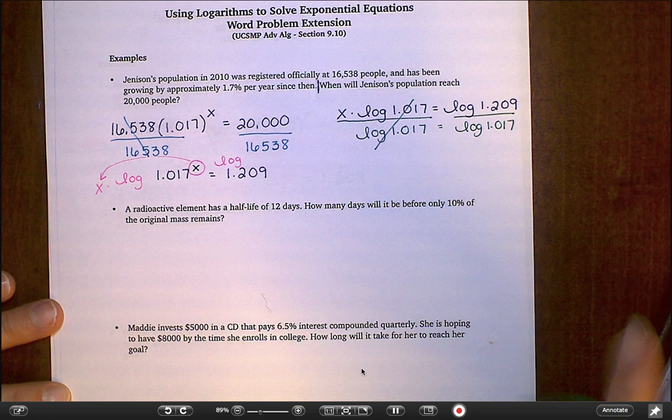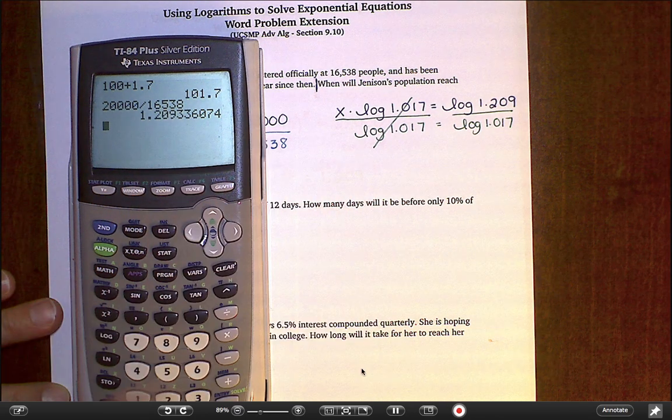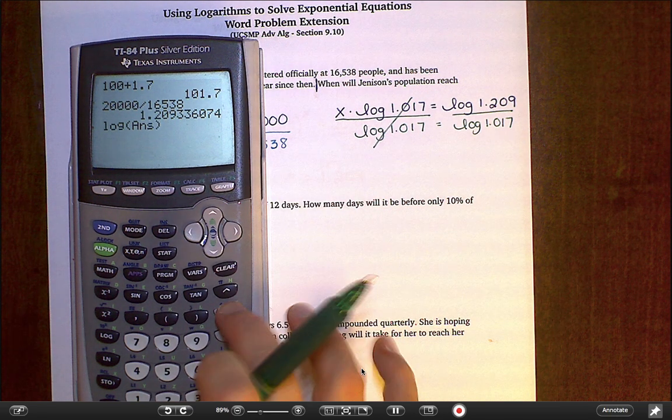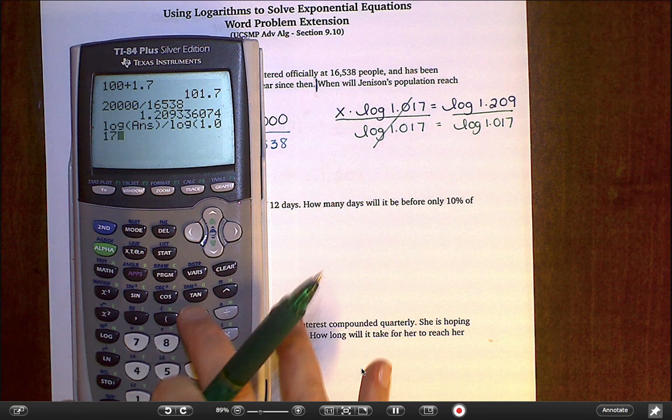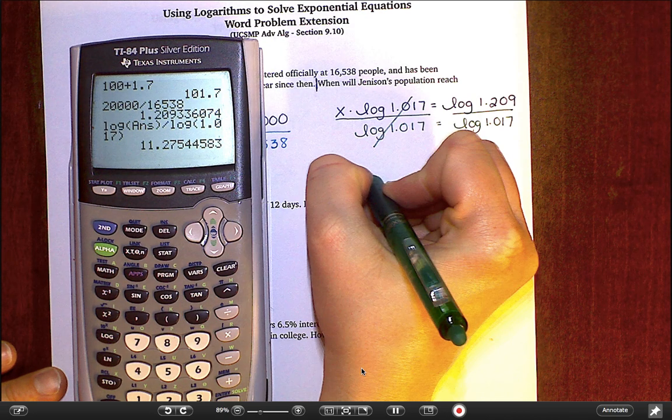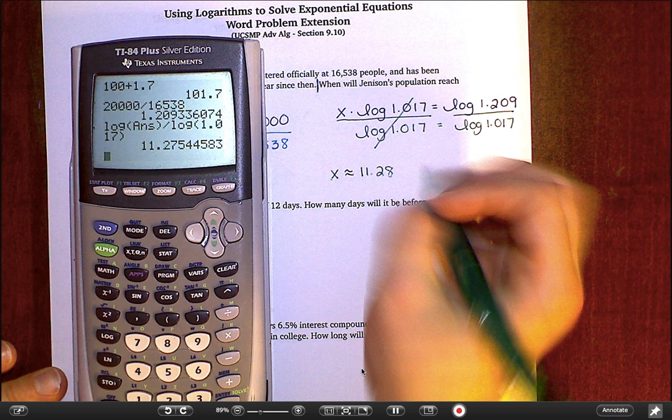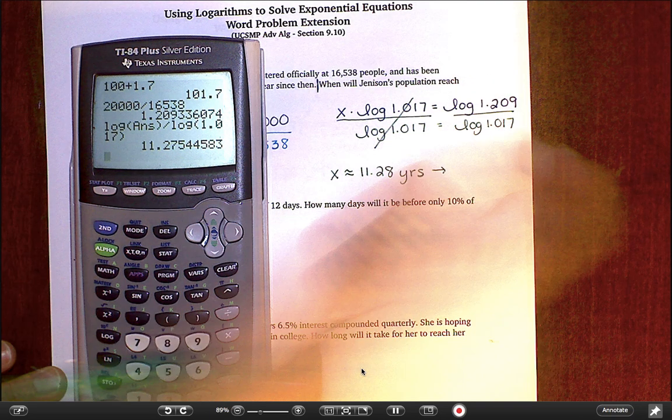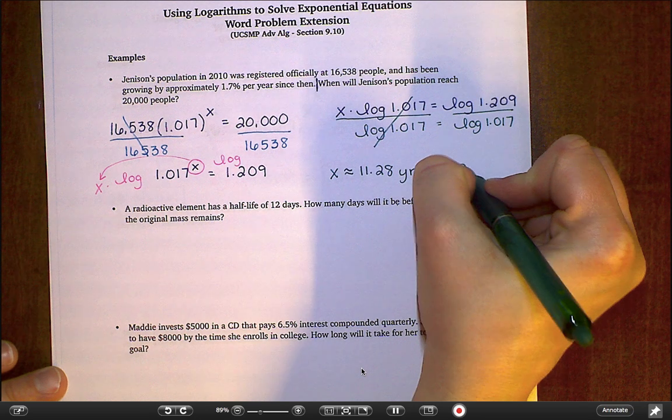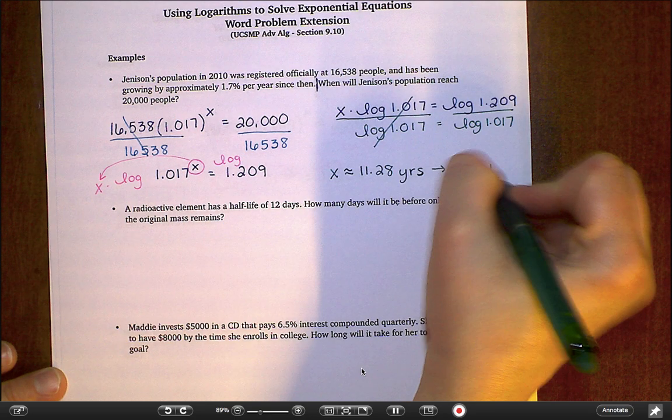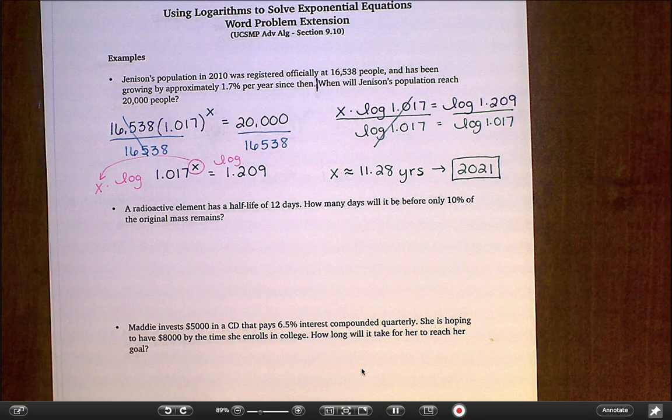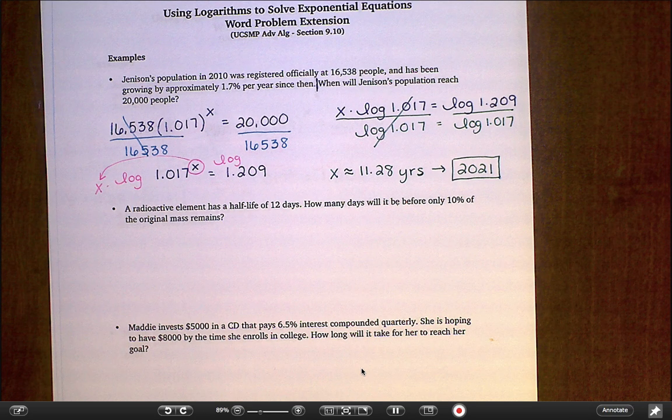So I'm going to divide by that log of 1.017. This is going in my calculator. And when I do that in my calculator, because I want to try to keep that whole decimal in there, I'm going to do log of the answer. I'm going to use this answer button down here. Divided by log of 1.017. And I end up with this 11.27. So I guess it round to 11.28. And remember that x really represents our number of years. So to answer our question, we would want to go this many years forward from 2010. So it would be sometime during the year 2021 that we would expect Jenison's population to reach, what was it, 20,000. So again, this is just taking what we learned in 910 and applying it back to what we did at the beginning of this chapter.